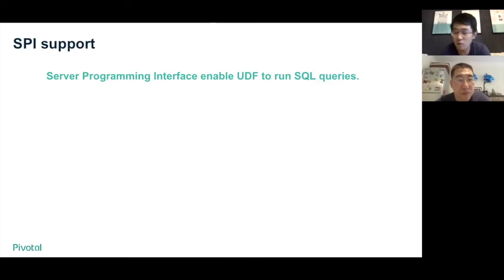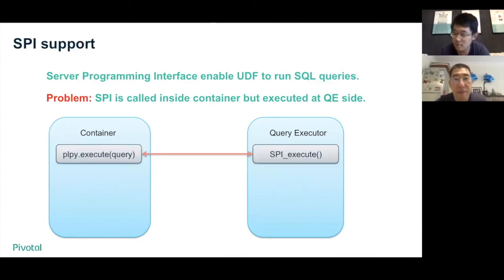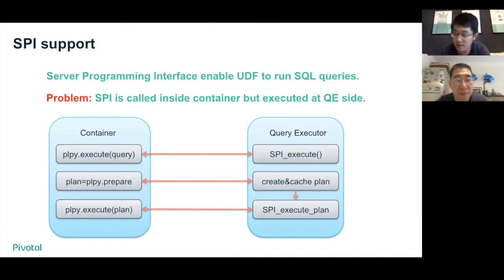SPI is short for Server Programming Interface, which enables UDFs to run database queries. The SPI query is generated inside the container but runs as the query executor's context. We create a message of SQL type to handle it. For normal queries, the container sends the statement to QE and QE executes the query. For prepared queries, the container sends the statement to QE, and QE generates and caches the plan for the statement, sending the plan's address back to the container. For templated queries, the container sends the statement along with the plan address to QE, and QE runs the statement based on the cached plan.